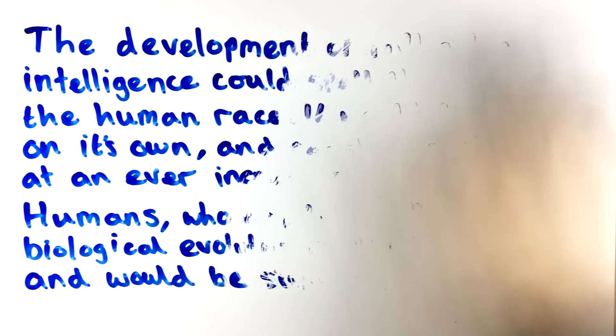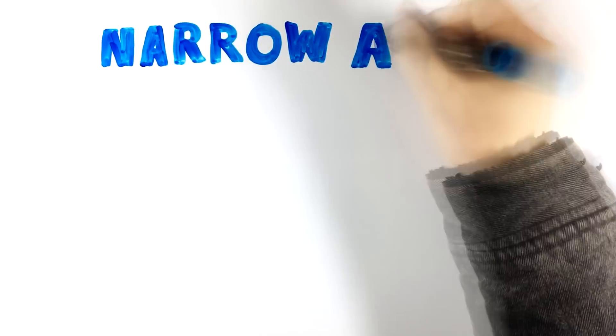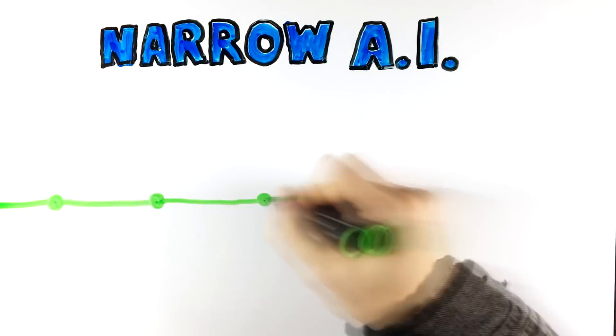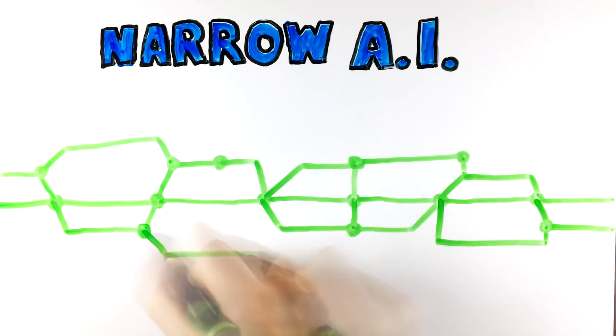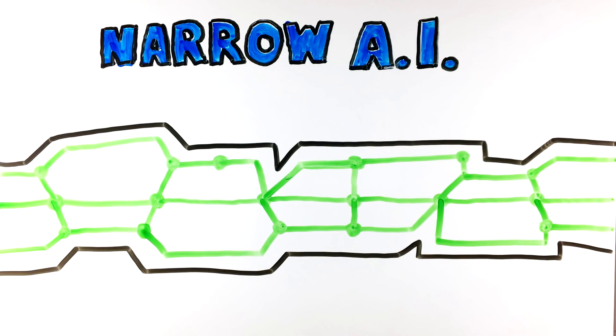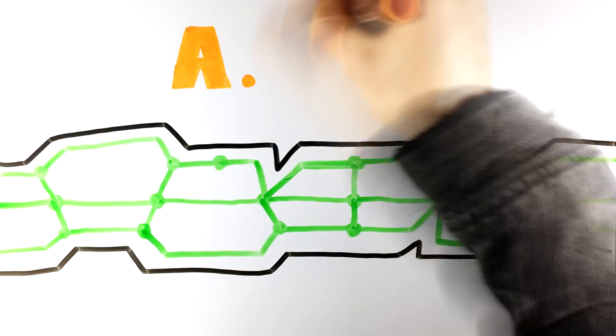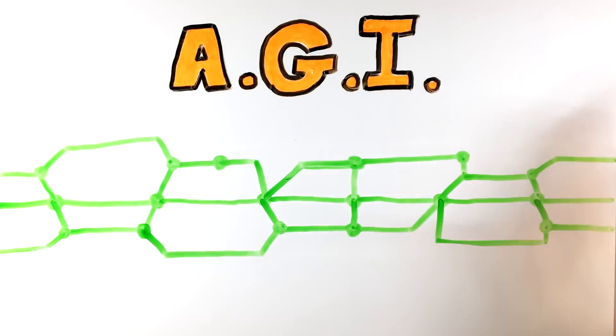There are two kinds of AI. What we have today is called narrow AI. It's designed to do a single task and do it better and better, but it cannot evolve outside of that task. Then there is AGI, Artificial General Intelligence.